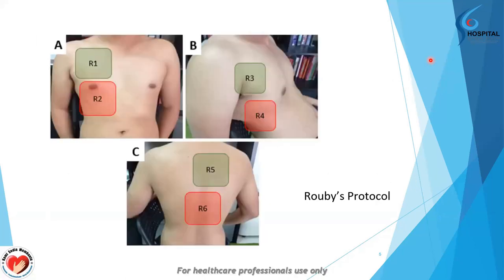These are the regions where lung ultrasound is performed — the protocol is called RUBS protocol. It consists of six segments in each hemithorax. When you combine both hemithoraces, you get a total number of sectors that will be interrogated when performing lung ultrasound.